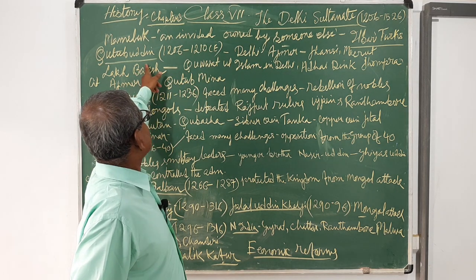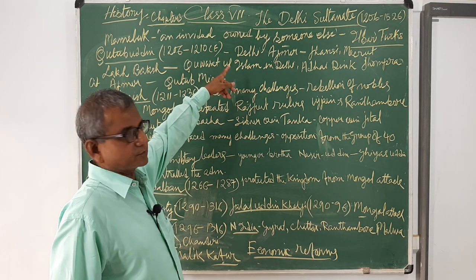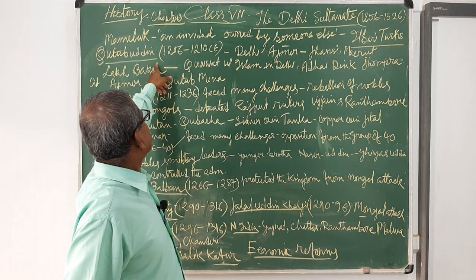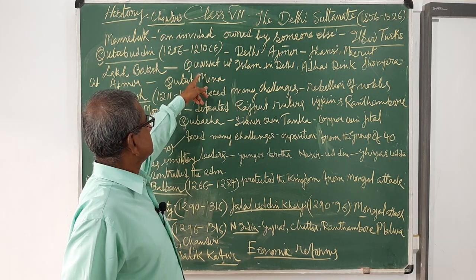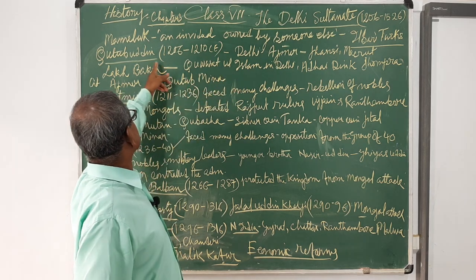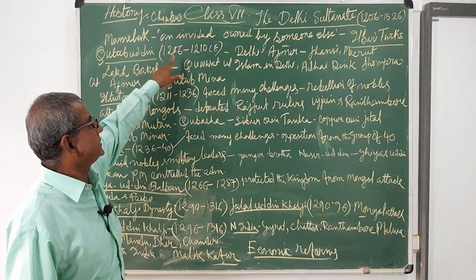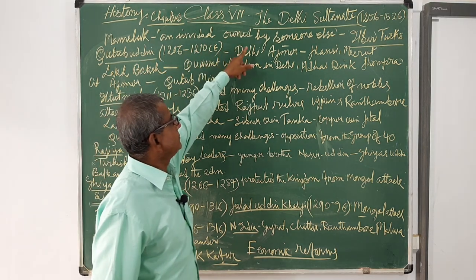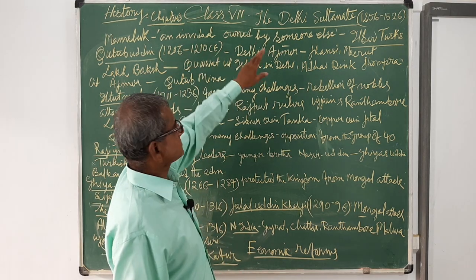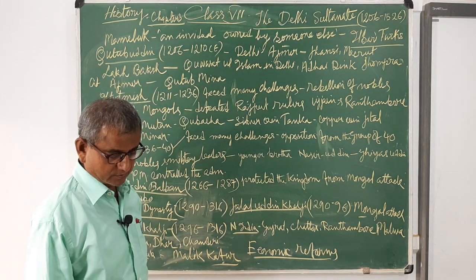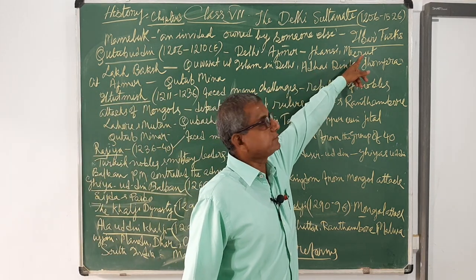Qutbuddin Aibak was a slave of Muhammad Ghori. The slave rulers are also known as Mamelukes. Mameluke is an Arabic word meaning an individual owned by someone else. They belonged to the Ilbari tribe, the Ilbari Turks.